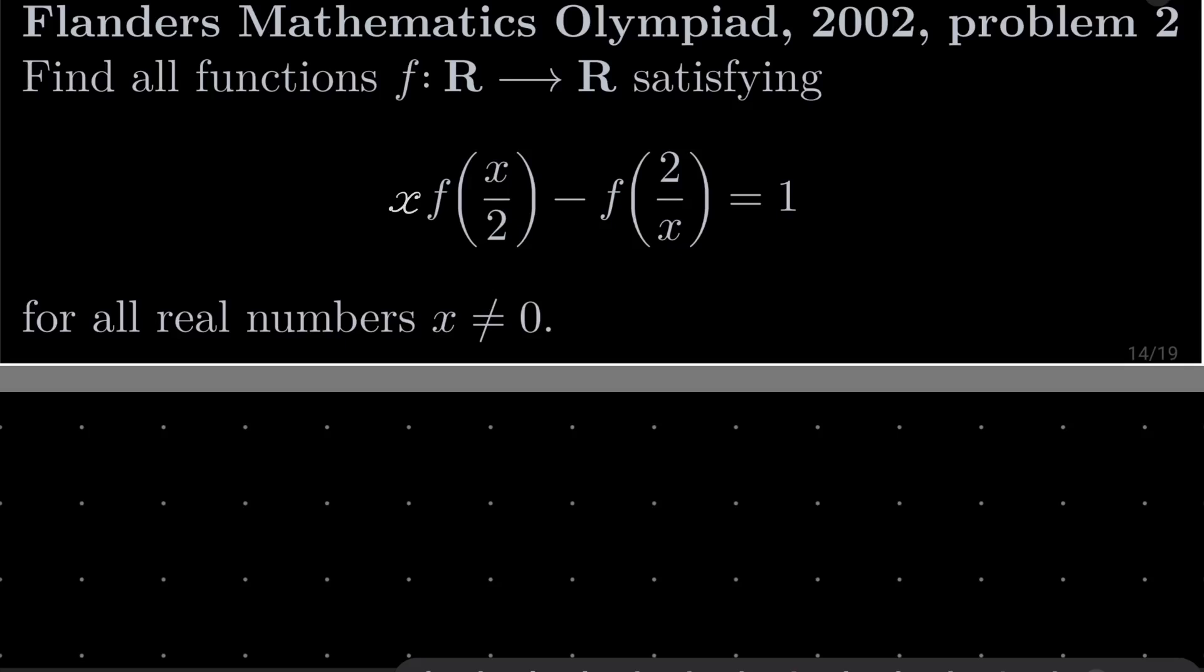We want to find all functions f from the set of real numbers into itself satisfying this condition: x times f(x/2) minus f(2/x) equals 1 for all real numbers x which are not equal to 0.